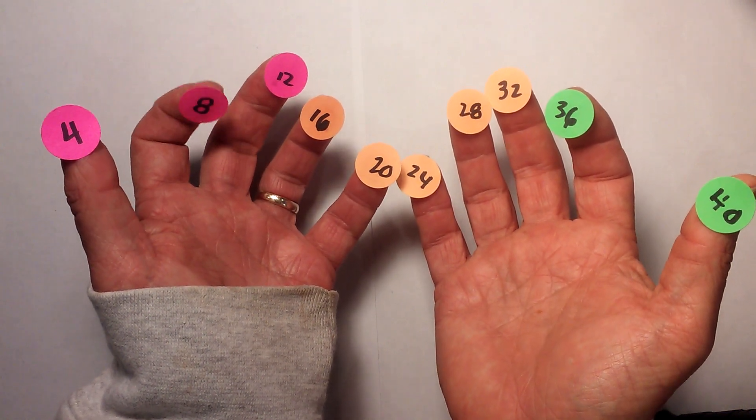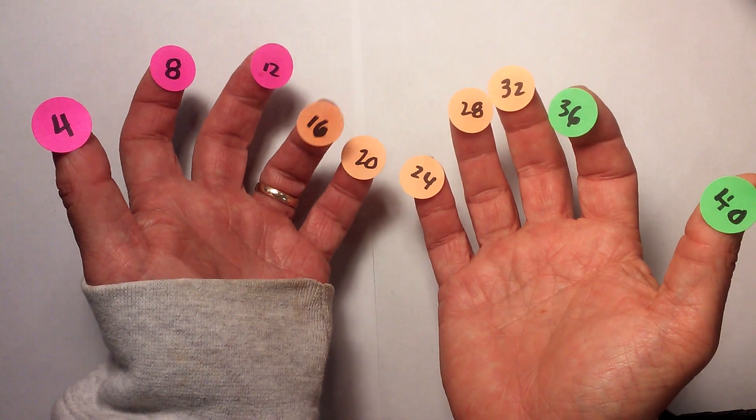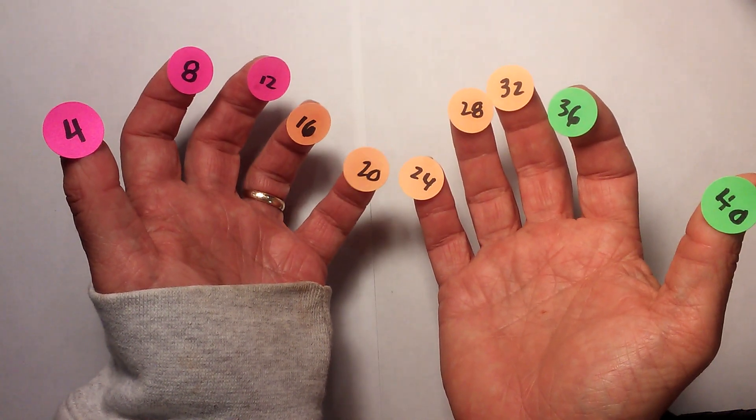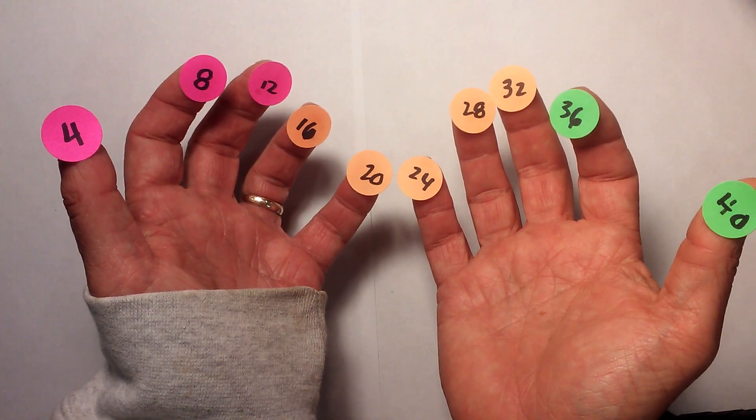We know about number 5: 4 times 5 is 20. And then the pattern repeats again: 4 is 24, 8 is 28, 2 is 32, 6 is 36, and 40.